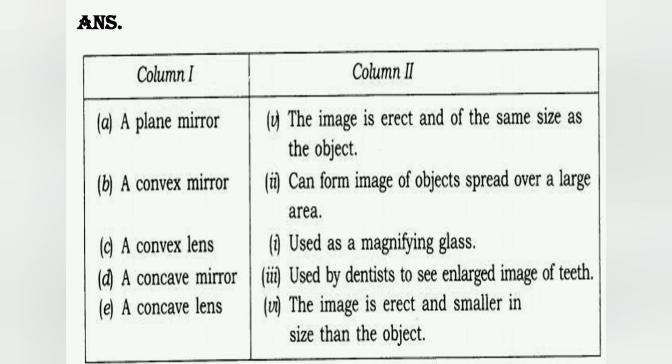B. A convex mirror can form image of objects spread over a large area. Joh convex mirror hota hai, usko rear view mirror bhi kaha jata hai, kyunki woh ek kafi lambe area ki image short karke dikhata hai. C. A convex lens used as a magnifying glass — woh image ko enlarge karke dikhata hai, so usse magnifying glass bhi kahte hain.